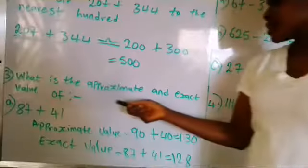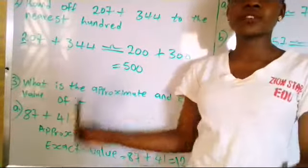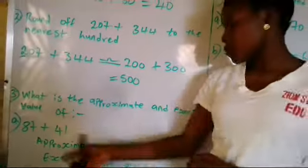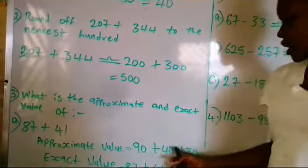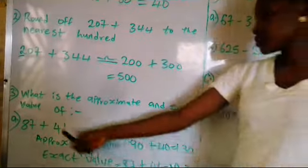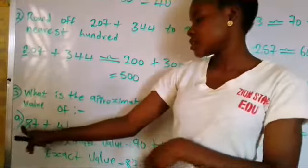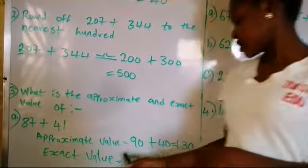Now we have another example here. What is the approximate and exact value of 87 plus 41? When you finish approximating and you get the value, you have to look for the exact value. The approximate value is, if you approximate 87 by rounding this 7 up to 1 and adding it to 8, we have 90.